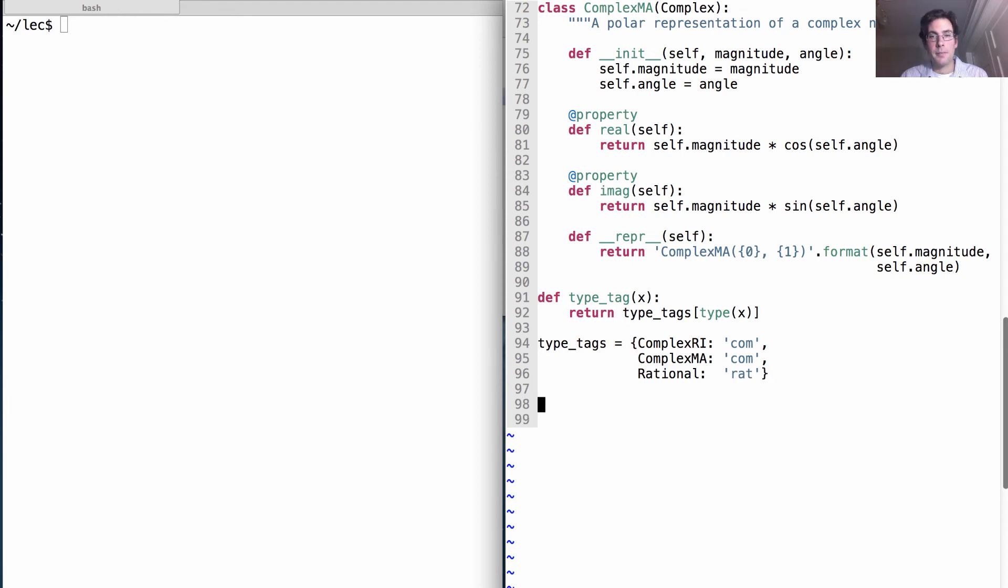which is a rational number. Okay, now that we have type tags, we can define what it means to add two numbers together.